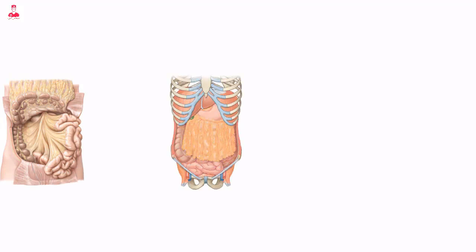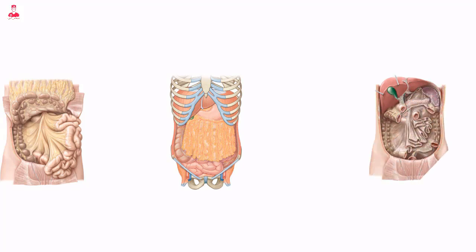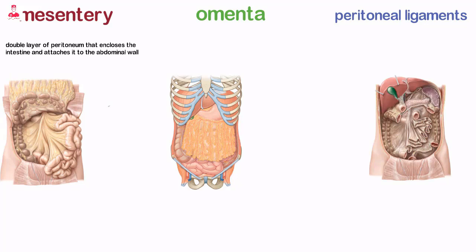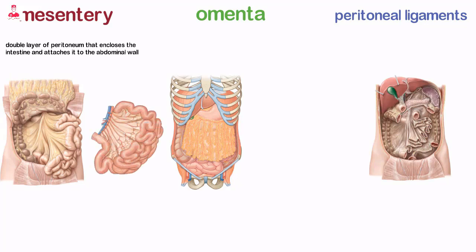Numerous folds of peritoneum extend between organs, serving to hold them in position and at the same time enclose the vessels and nerves proceeding to each structure. These folds, or double layers of peritoneum, are termed mesentery, omenta, and peritoneal ligaments. The mesentery is a double layer of peritoneum that encloses the intestine and attaches it to the abdominal wall, serving as a route for blood vessels, lymphatics, and nerves to reach the small intestine.